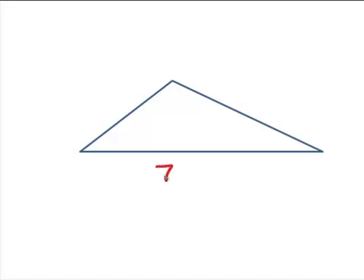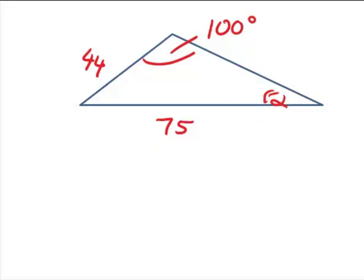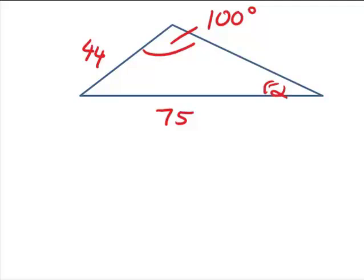So consider this triangle. And let's say that side has length 75, this side length 44, and that that angle here is 100 degrees. And let's suppose we wanted to find the angle alpha over here. And what you might notice is that the angle alpha is opposite the side of length 44 and the angle 100 degrees is opposite the side of length 75, indicating we can actually use the sine rule here.